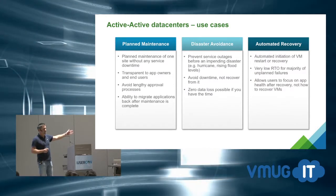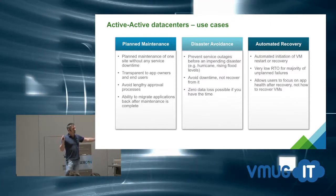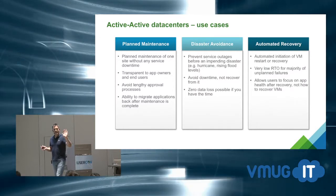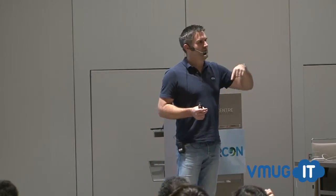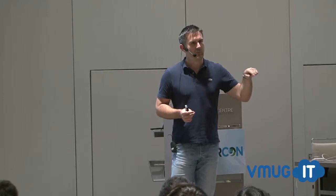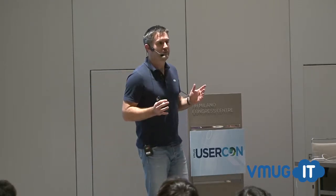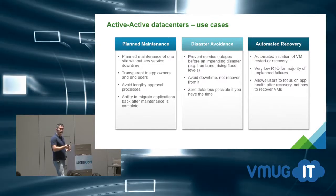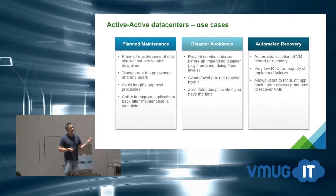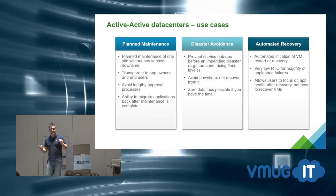One of the most important things with this federated HA model is that human beings don't have to get involved in the failover — it's automatic. That matters a lot because typically with a geo-distance design involving SRM, someone has to push the button. In most organizations, what usually happens is people have WebExes and conference calls and go around in circles while the clock is ticking and nobody's made a decision on whether to fail over.